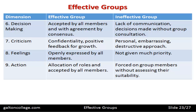For the action dimension, in an effective group, roles are allocated and accepted by all members — if something needs to be done, actions are allocated to members who then get on with it. For an ineffective group, tasks are forced on group members without assessing their suitability — it's just allocated out without much regard to their ability or competencies in those areas, which is very ineffective.